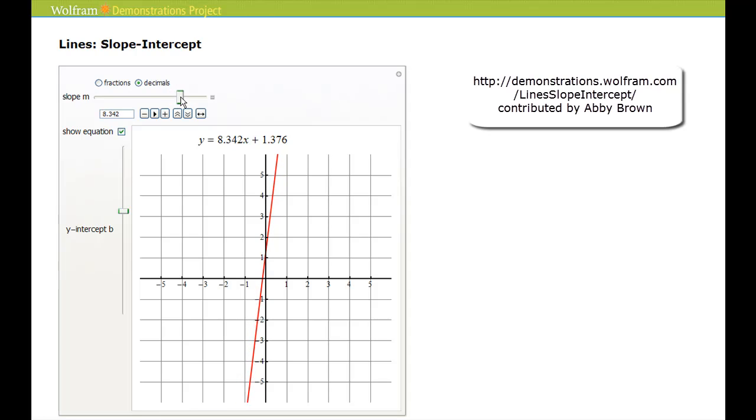So if I increase it to 9, picking a point on the line, we'd have to go up 9 units and right 1. So as the slope increases, the line becomes more steep from left to right.